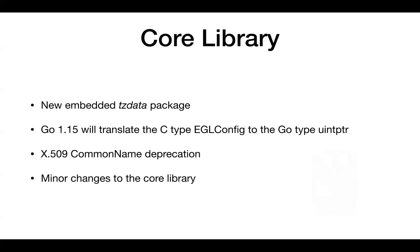If a test main function returns, the test binary will call OS exit with the value returned by the test run. This is useful because on our project we had an issue where when we started the testing for the whole package everything worked fine, but when we started test by test we had an error — we just put OS exit with zero code without checking the result from the test run. But now this is controlled by the test library.